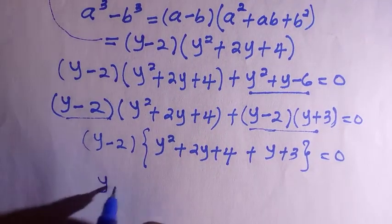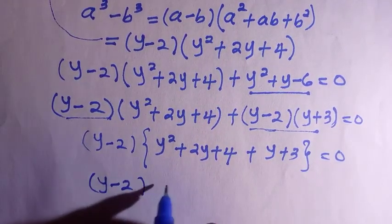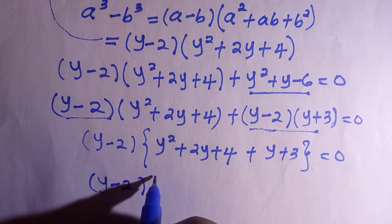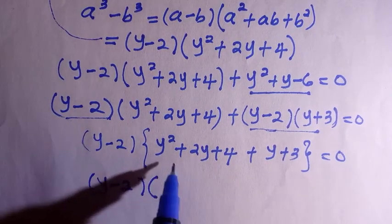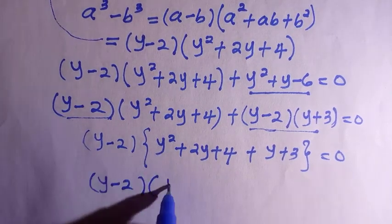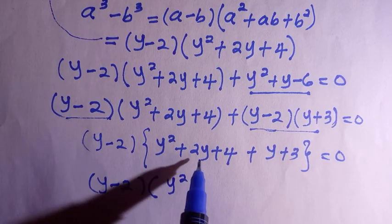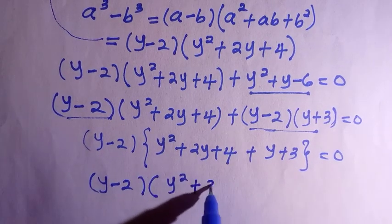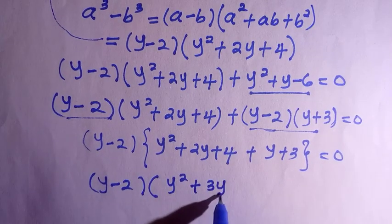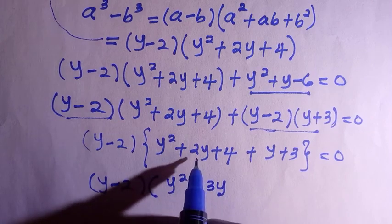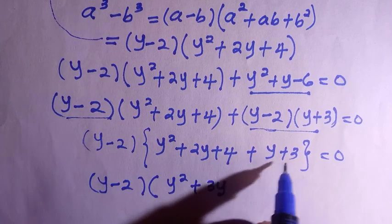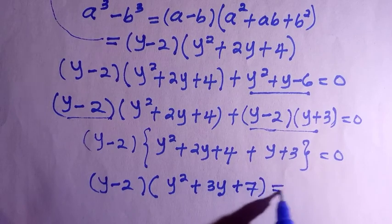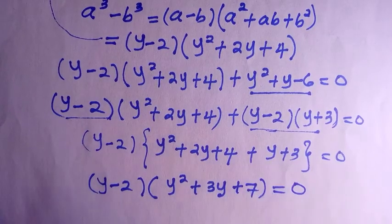Adding the terms inside the large bracket: 2y plus y gives 3y, and 4 plus 3 gives 7. So the equation becomes (y minus 2)(y squared plus 3y plus 7) equals 0.